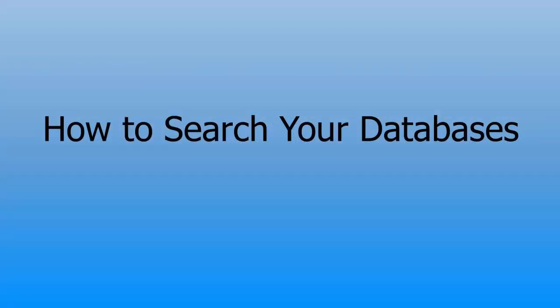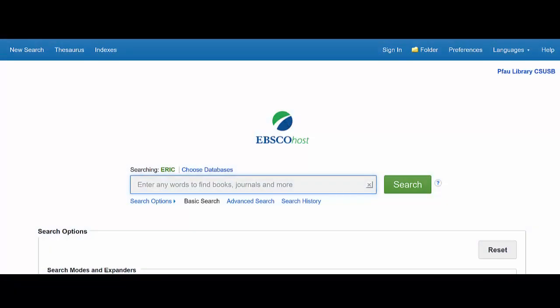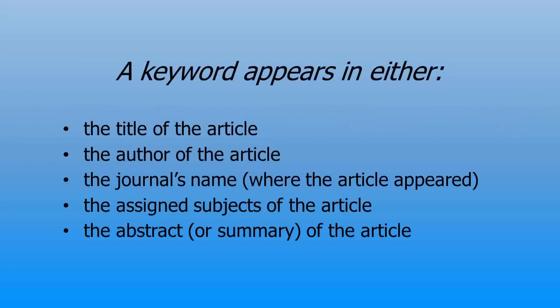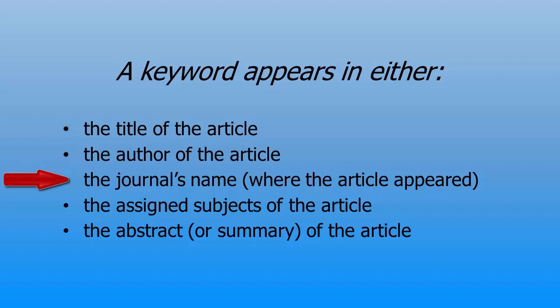How to search your databases. If you don't know a great deal about the topic you are searching, it is common to begin a search by using a series of keywords. A keyword in most databases is a word that appears in the record in either the title of the article, the author of the article, the journal's name, or where the article appeared, the assigned subjects of the article, and the abstract, or summary, of the article.